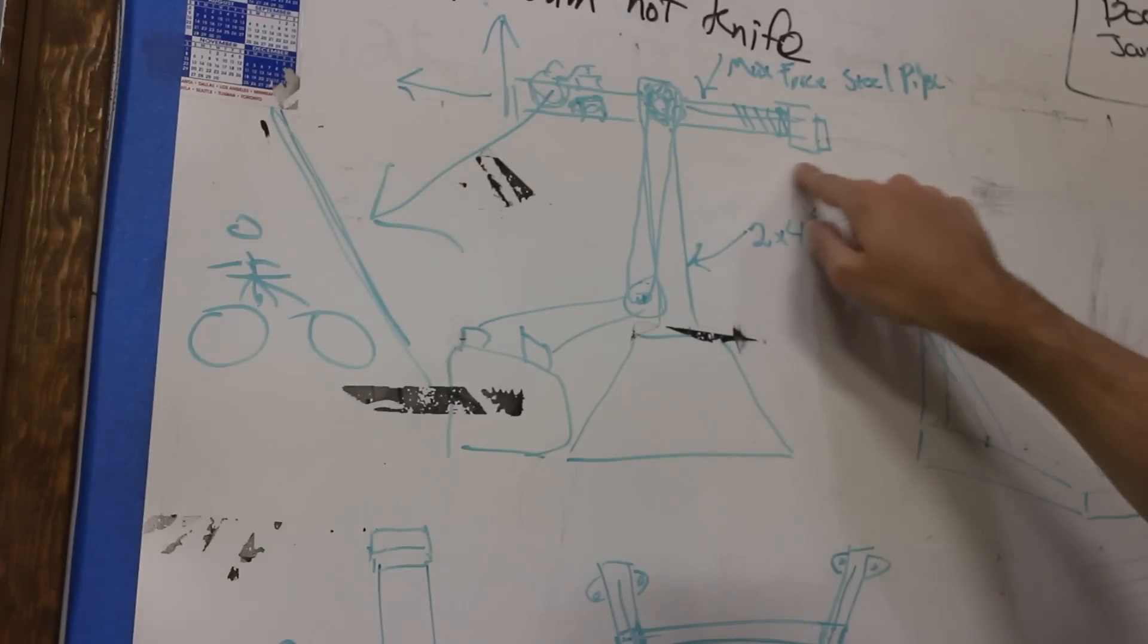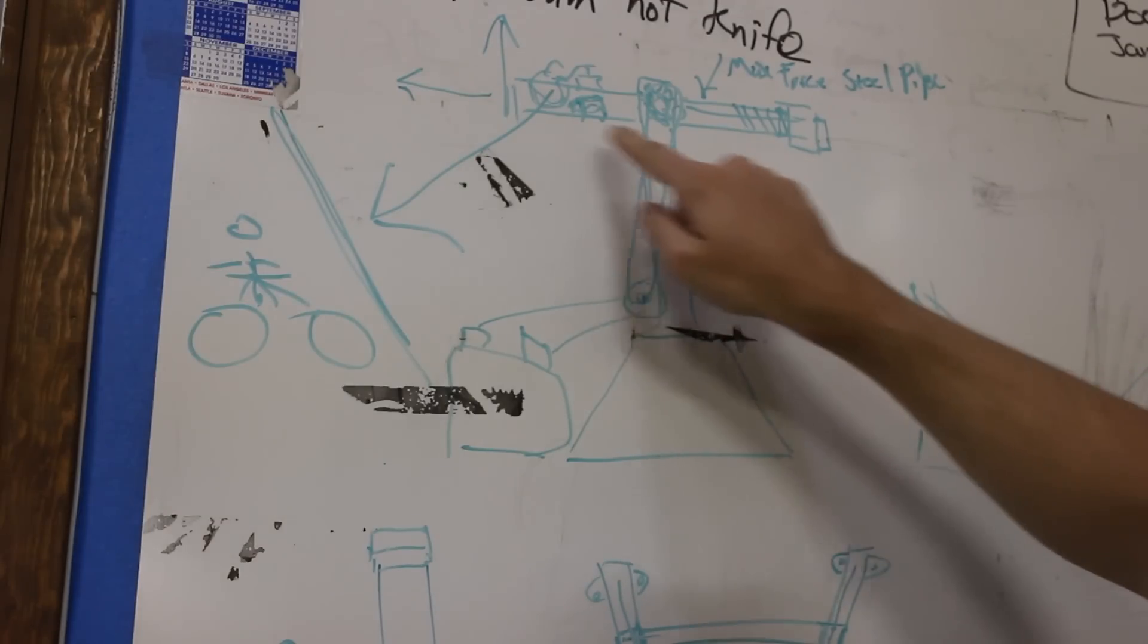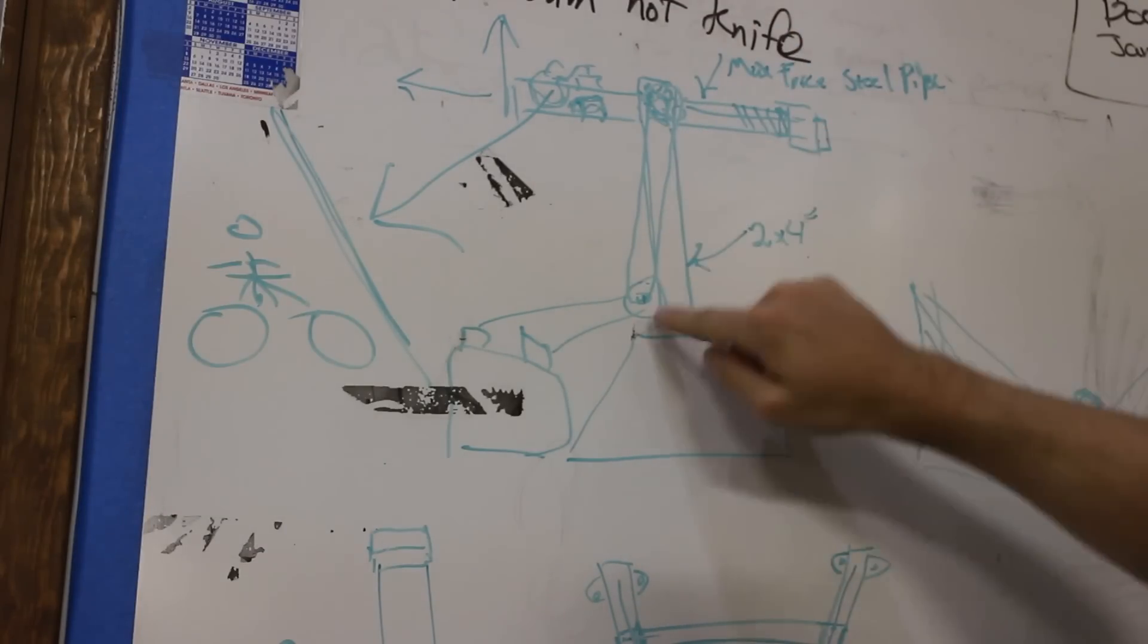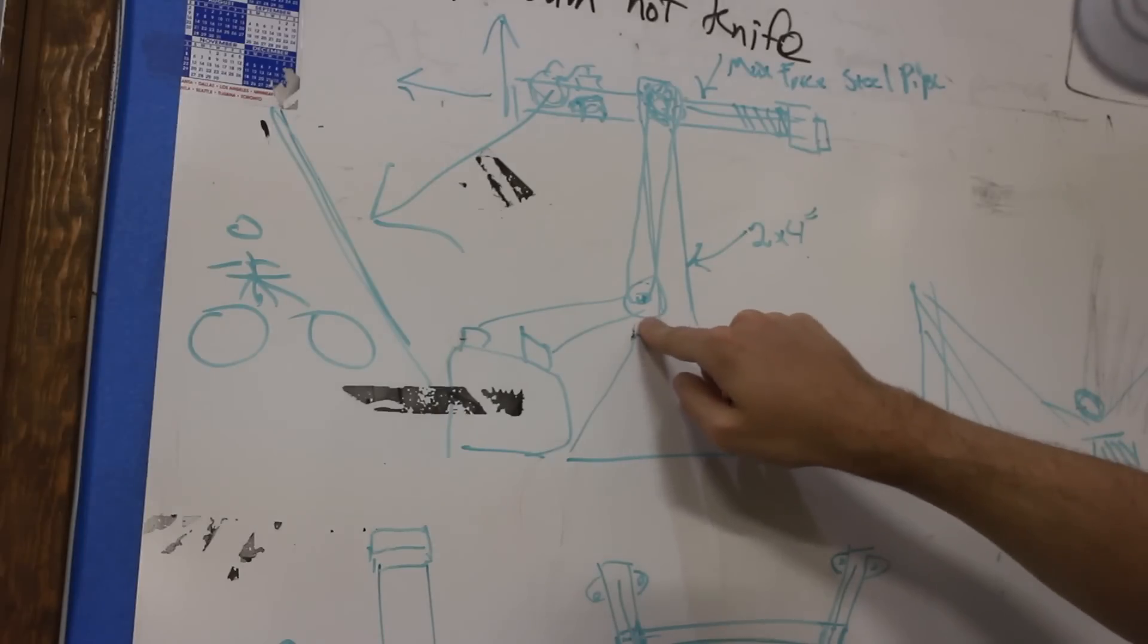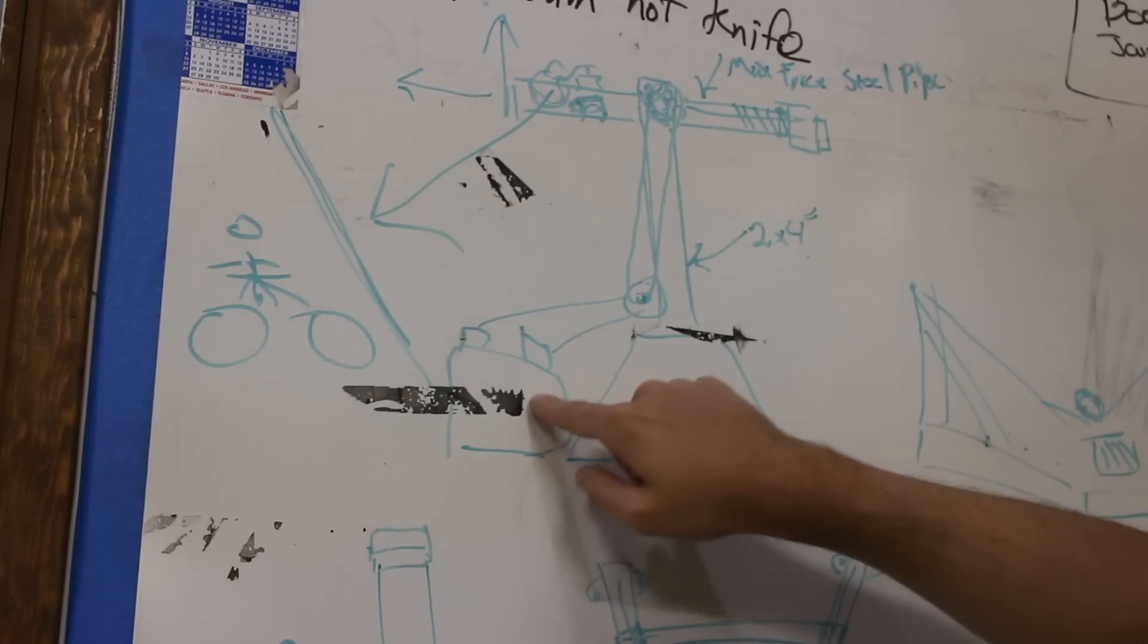We're talking about probably having a counterweight on the other end to balance the pumpkin's weight. It'll also probably be chain driven with the motor down here connected to some kind of battery so we don't need to plug it in.